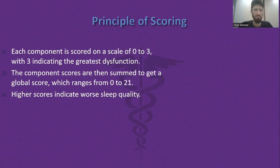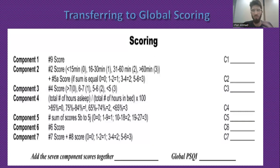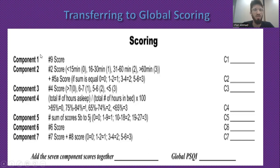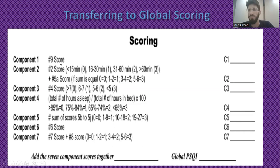Looking at the questionnaire, there are nine questions. Question four has two parts (a and b), and question five has ten sub-parts (a through j). The questionnaire is divided into seven components. For component one, you take the score directly from question number nine. For component two, you sum the scores from question two and question five-a to get the component two raw score.